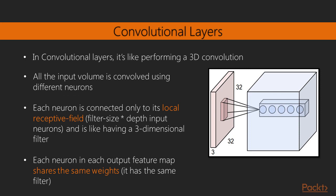Since in our CNN we operate with volumes, a convolutional layer operates like performing a 3D convolution. As we have said, all the input volume is convolved using neurons in different depth columns. Each neuron is connected only to its local receptive field of filter size times the input neurons and is like having a three dimensional filter. Each neuron in each output feature map shares the same weights, that is it has the same filter.